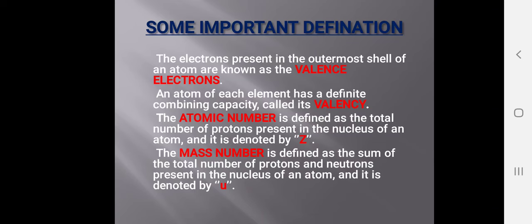Mass number is defined as the sum of the total number of protons and neutrons present in the nucleus of an atom. It is denoted by small 'u', which stands for unified mass.